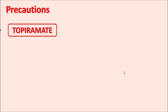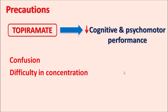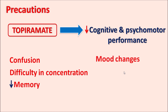Similarly, topiramate can reduce cognitive as well as psychomotor performance. This drug can produce confusion, difficulty with concentration and attention, decreased memory, mood changes, somnolence, sleepiness, and fatigue. These effects are more pronounced with increasing age. If a patient already has cognitive disturbances, topiramate should be used carefully.